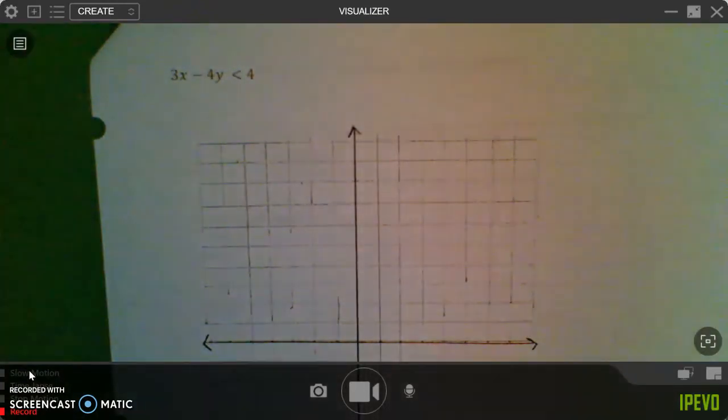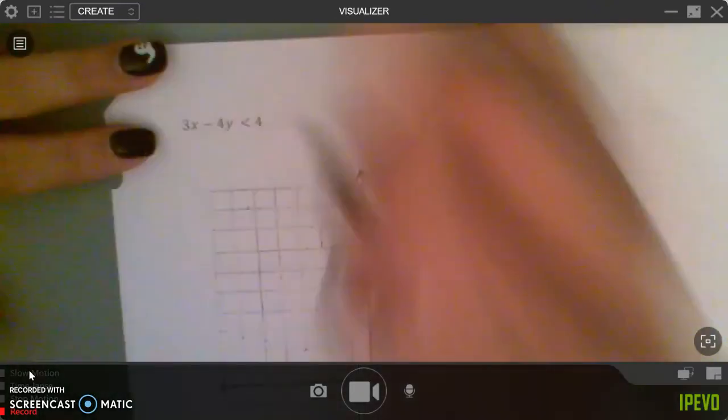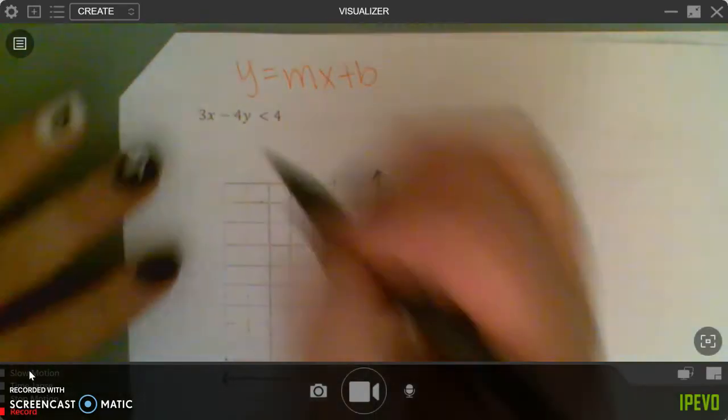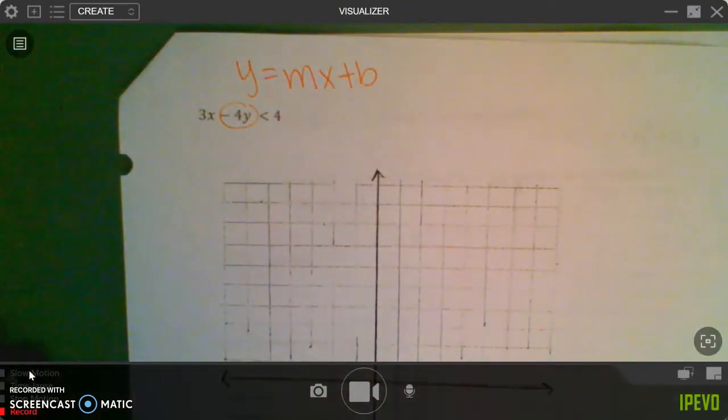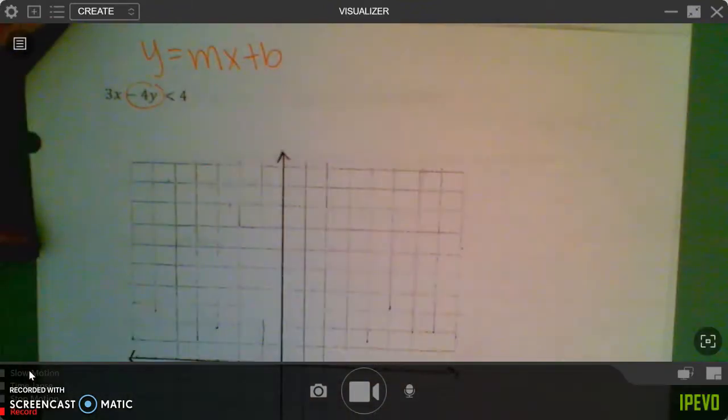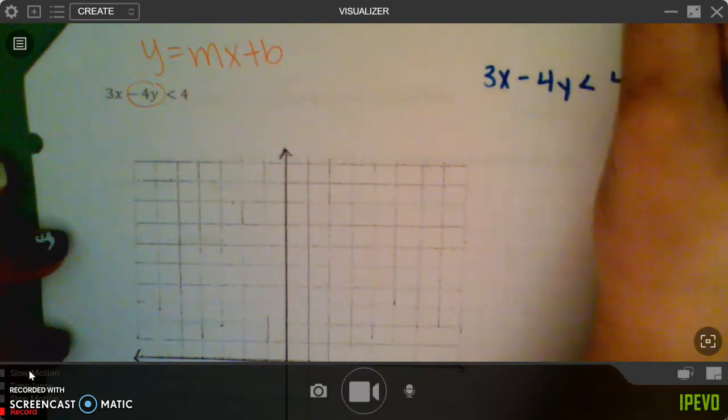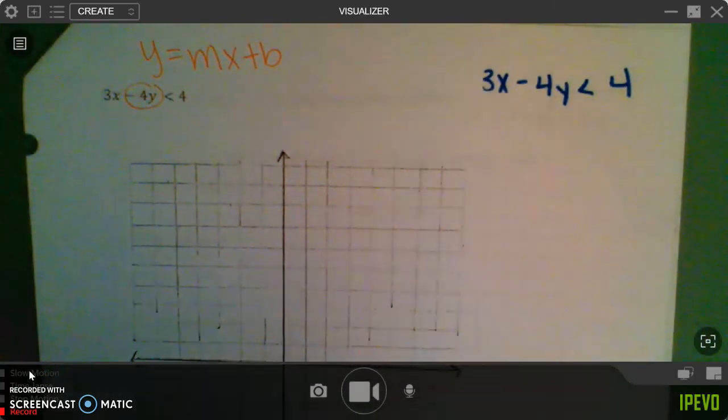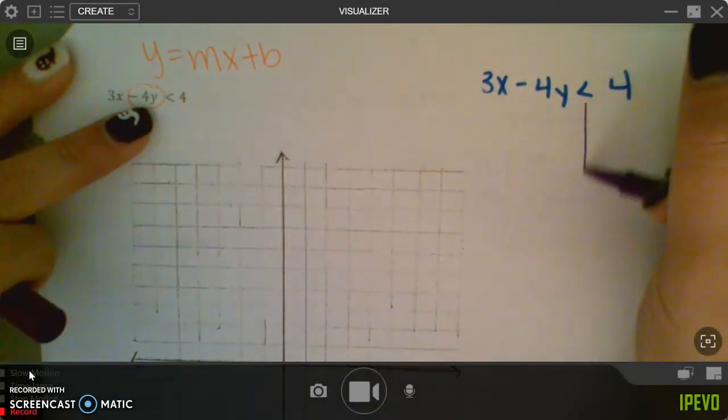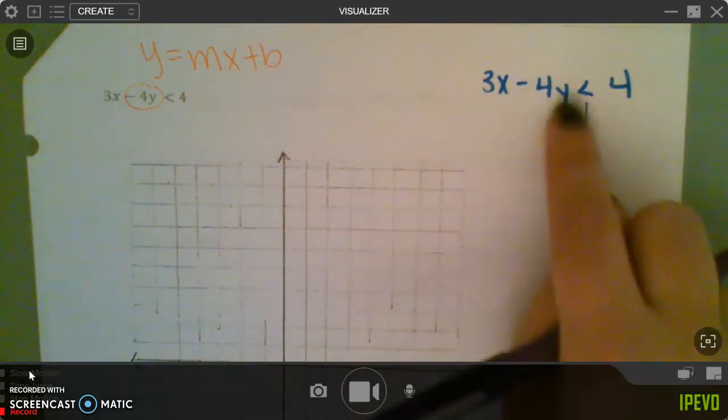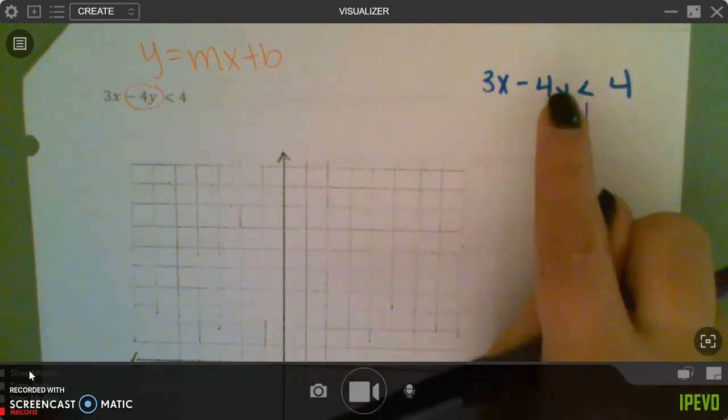This next equation is not in the proper form. Remember, it has to be y equals mx plus b, which means I need this y to be by itself. So I'm going to go ahead and just rewrite this equation on the right side, just so I have more space. So I need to solve for y. So the first thing is I'm going to draw my line down, the inequality symbol, and I need to get this y by itself, so the y is staying. I have to get rid of the 3x, so I'm going to move the 3x to the right side.